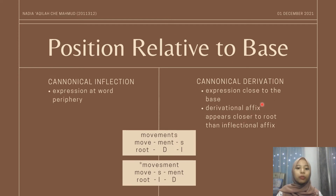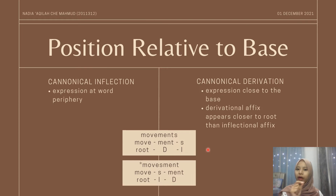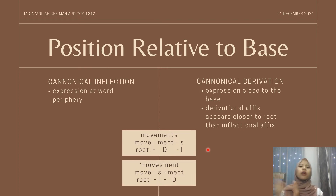For example, take the word 'movements.' If we divide it, it becomes: 'move,' which is the root; '-ment,' a derivational morpheme; and '-s,' an inflectional morpheme. This proves that the inflectional morpheme is far from the root when a derivational morpheme is present.